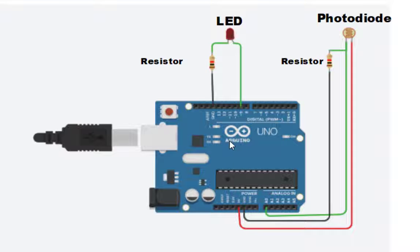We will require Arduino Uno and we need two resistors — this one is 100 ohms and this is 1 kilo ohm. Then we require an LED, the light emitting diode, and we require a photo diode. This photo diode is the actual photo sensor; the property is that when light falls on it, the resistance of this particular photo diode will change.